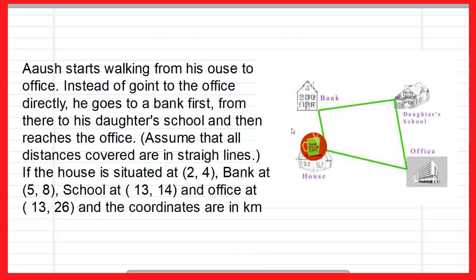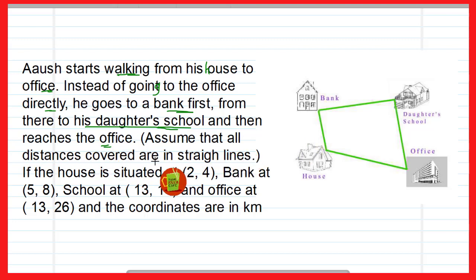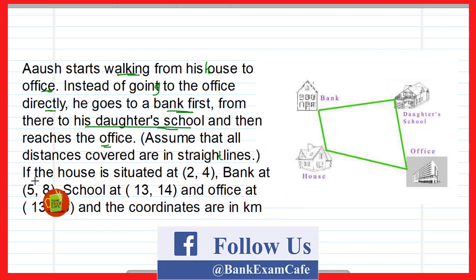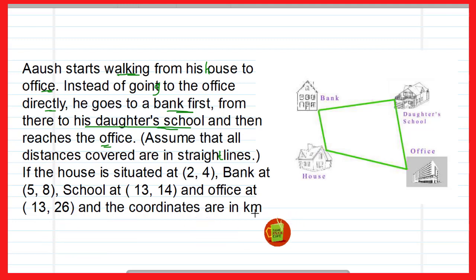Now let us move to the question. Here is the question on the screen: Ayush starts walking from his house to office. Instead of going to the office directly, he goes to the bank first, then to his daughter's school, and then reaches the office. Assume that all distances are covered in straight lines. The house is situated at coordinates (2, 4), bank at (5, 8), school at (13, 14), and the office at (13, 26). The coordinates are in kilometers.